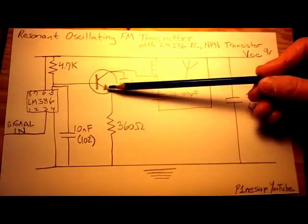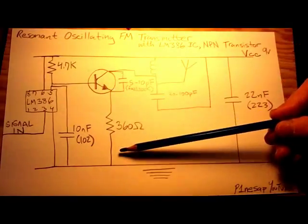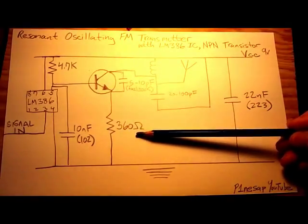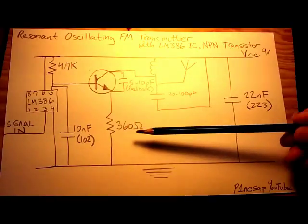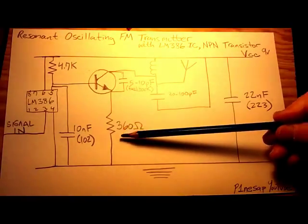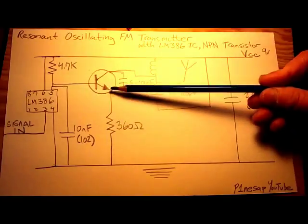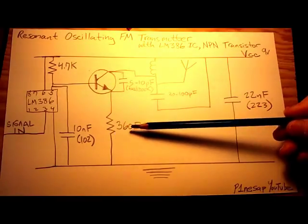Now on the NPN, the emitter is going to ground of course. I'm using a 360 ohm resistor. However, you can play with that value. I've seen 470 as well, even 100, but I'm using 360.